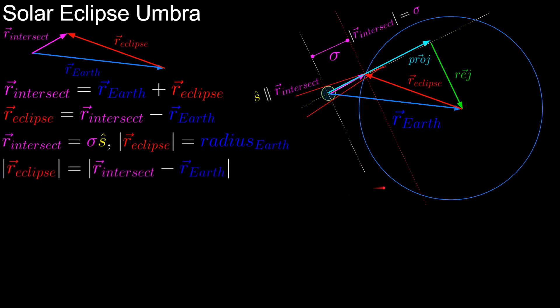Next we're going to take the norm of both sides of the equation and plug in our variables, and when we get to this point we see that we have an equation with only one scalar unknown, which is the sigma value, because we know the radius of the Earth, we know the sun vector, and we know the Earth vector.